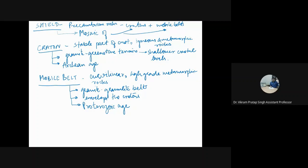Mobile belts are characterized by the lithological association of quartzite–carbonate–pelite, the QCP suite. If asked which lithological suite represents the mobile belt, the answer is QCP — quartzite, carbonate, and pelite. They may or may not show evidence of volcanic activity.